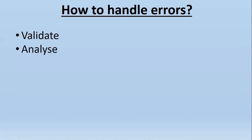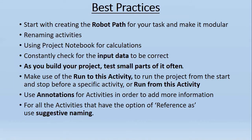Let me list down a few best practices. First, we should start by creating the robot path for our task and make it modular — this gives us a picture of which steps to perform and how to break them into logical modules. Second, rename activities: whenever you drag any activity, rename it, because when many activities are used in a process, renaming makes it easy to debug and locate the one that threw an error.